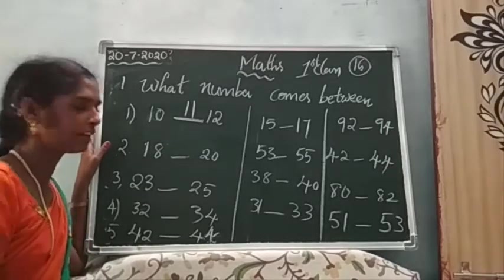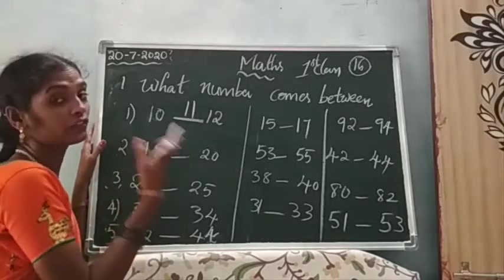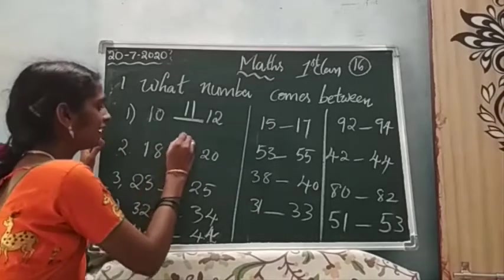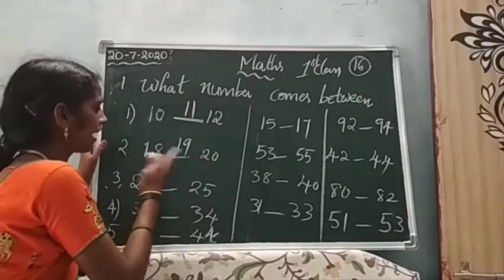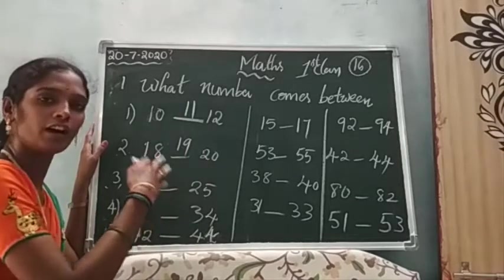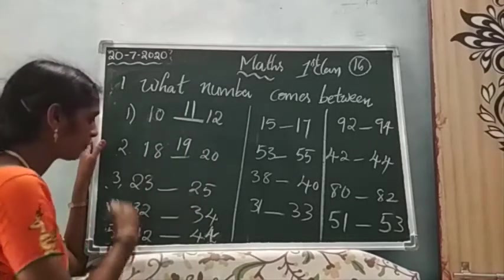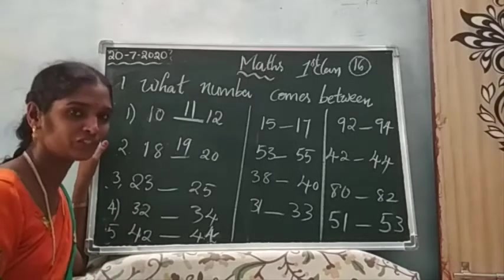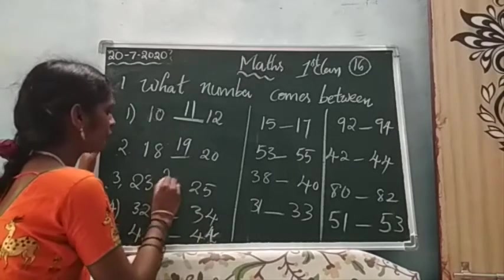After that, children: 18. 18 after which number? 18 after 19. And 20 before? Also 19. After that, 23 after which number? 23 after 24.